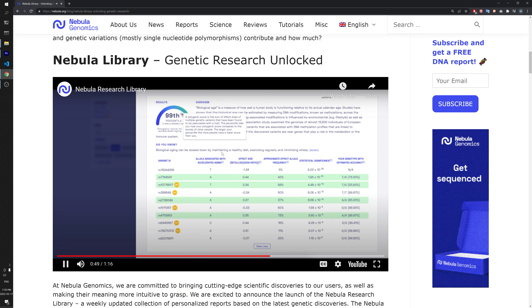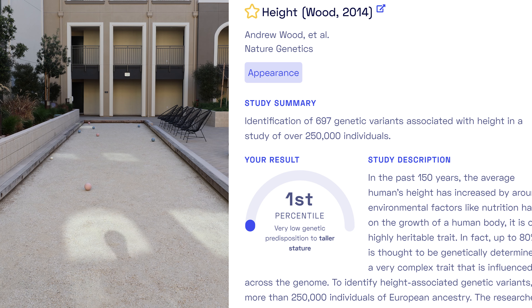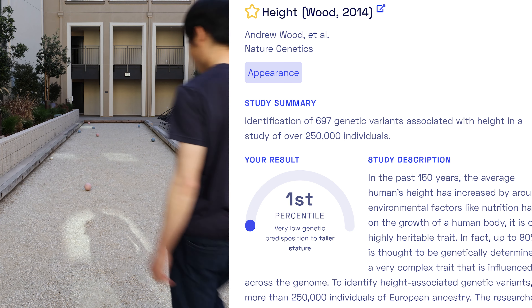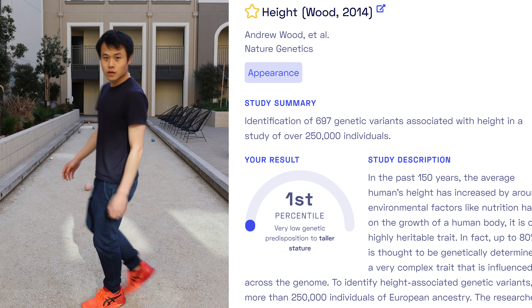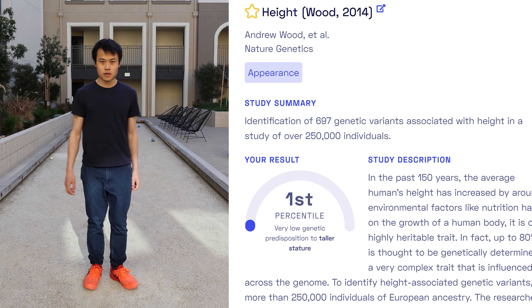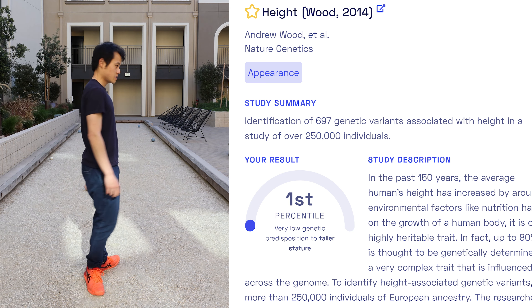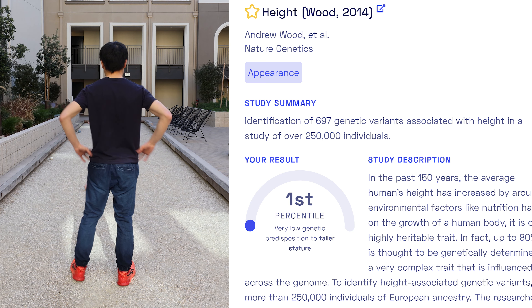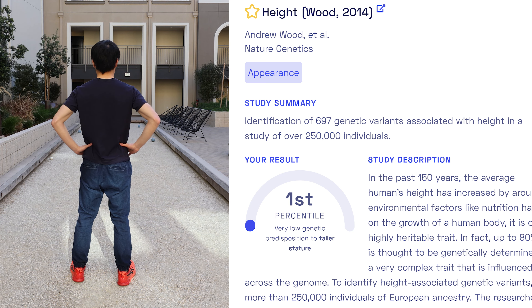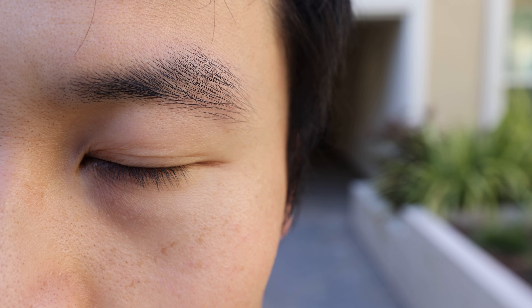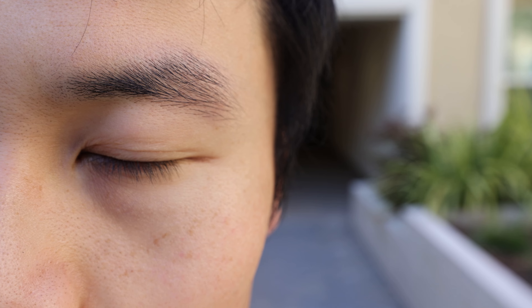Based on the genotypes, we calculate a polygenic score that estimates your genetic likelihood of exhibiting a trait, and we calculate a percentile that tells you how your score compares to the score of other Nebula users.